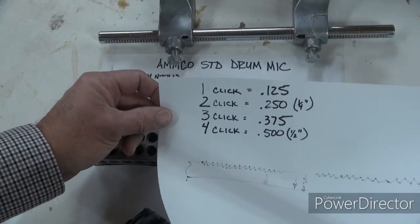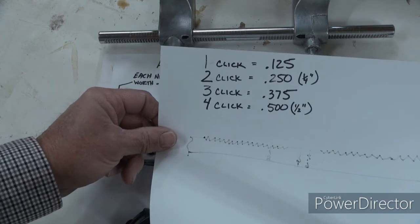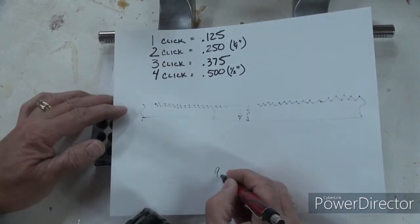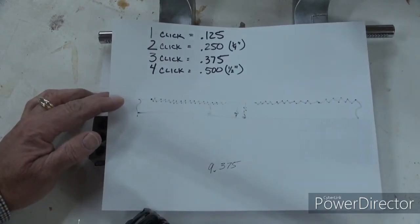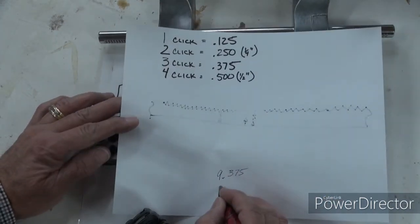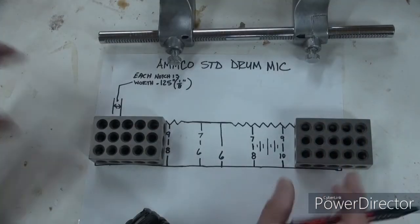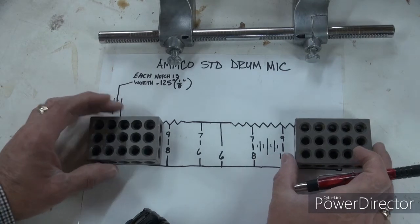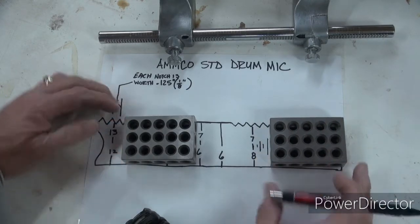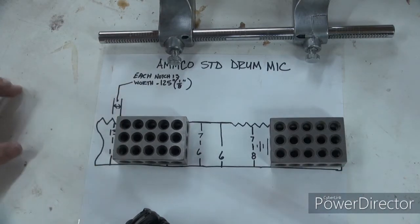Let's say I have it on nine and I need to move it out three clicks: one, two, three. I do the math and I see three clicks is worth 0.375. So now I've got my mic set up at nine inches overall, 0.375. If that's still not enough, go one more click and you'll be at 9.5 inches or nine and a half inches. That is really simply how these work.